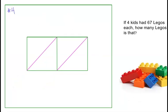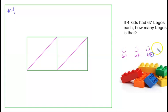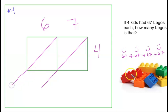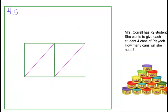Problem number four: if four kids had 67 Legos each, how many Legos is that? One kid has 67 Legos, the next kid 67, the next 67, the last kid 67 — then we'd have to add them all up. Since we're adding 67 every single time, we can just multiply 67 times 4. If you want to extend the two diagonal lines out, you can do that.